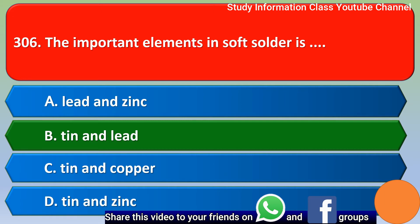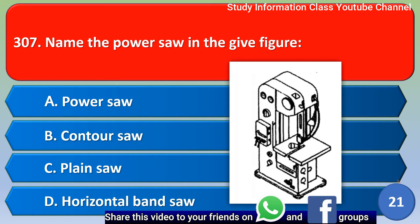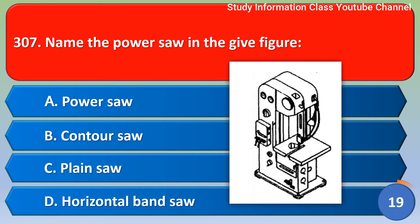Next question: name the power saw in the given figure. Option A: power saw, Option B: counter saw, Option C: plain saw, Option D: horizontal band saw. The right answer is Option B, counter saw. Option B is the right answer.